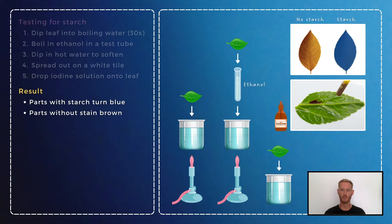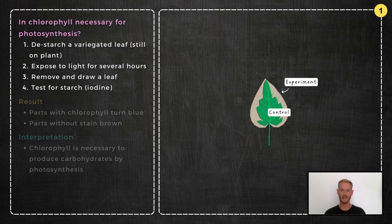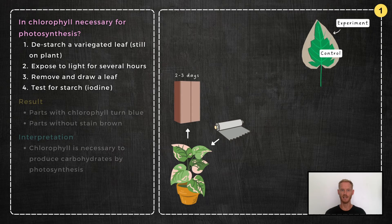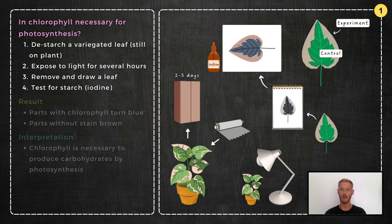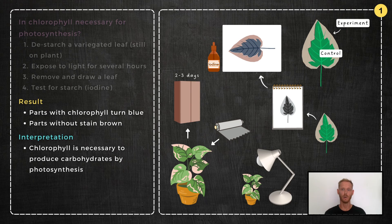Experiment 1: Is chlorophyll necessary for photosynthesis? A variegated leaf with only patches of chlorophyll is used — the white part is the experiment, as it has no chlorophyll, and the green part is the control. Start by destarching the leaf while it's still on the plant, by leaving it in darkness for 2–3 days or covering the leaf with foil. After being destarched, expose the leaf for several hours, then remove it, draw it carefully to record where the chlorophyll is, and test it for starch. As only the parts of the leaf containing chlorophyll change colour, we can conclude that chlorophyll is necessary for photosynthesis.